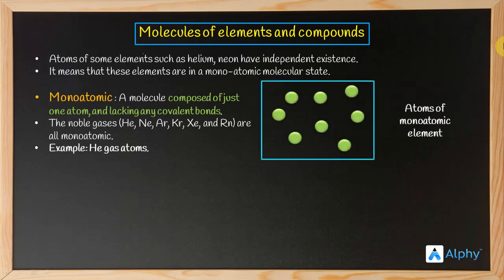Atoms of monoatomic elements. So monoatomic means what? These are elements where the atoms of noble gases elements remain as single atoms - monoatomic.